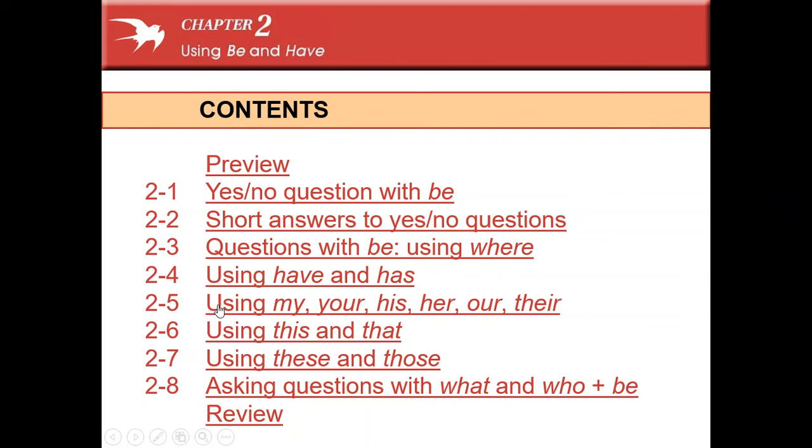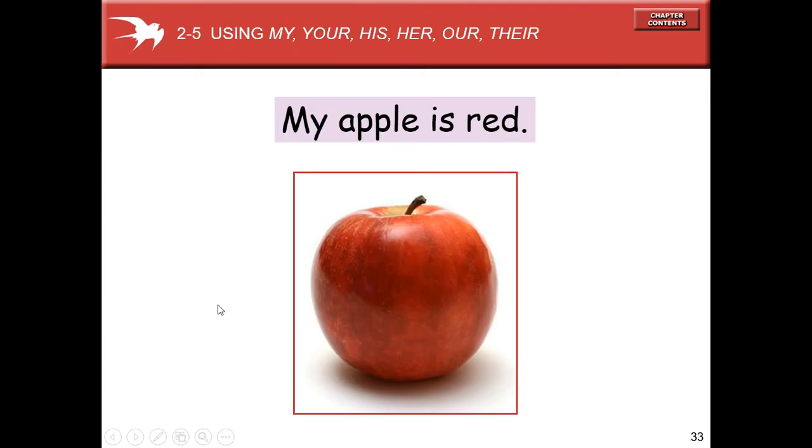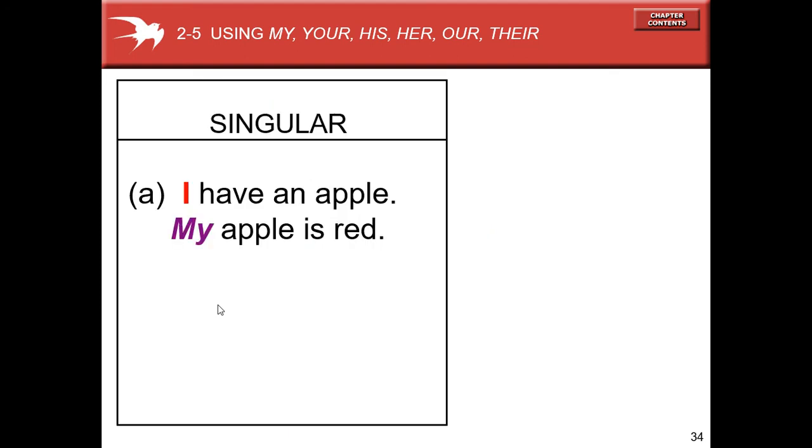Hello everyone, welcome to eLab. I'm Monica. This is 5-minute English with the verb to be, the verb to have, and the possessive adjectives. Let's go. My, your, his, her, our, their. My apple is red, singular. I have an apple, my apple is red. My is a possessive adjective. You have an apple, your apple is red. Your is a possessive adjective.